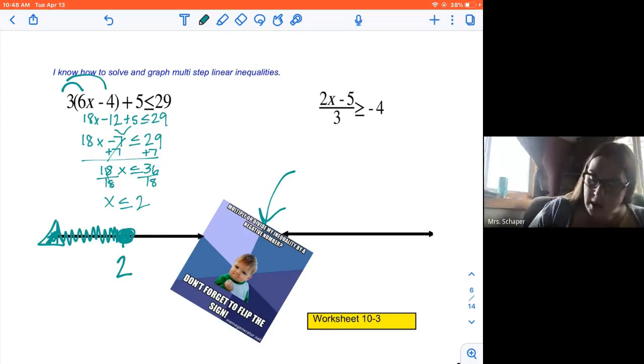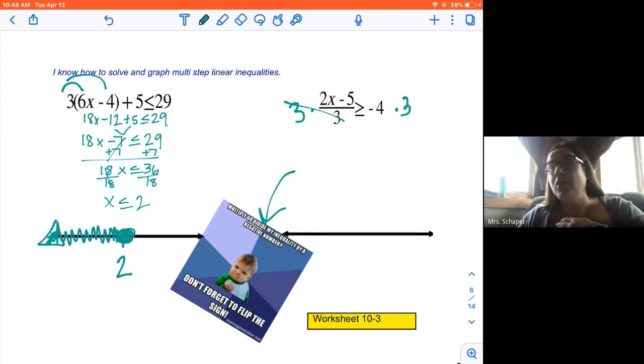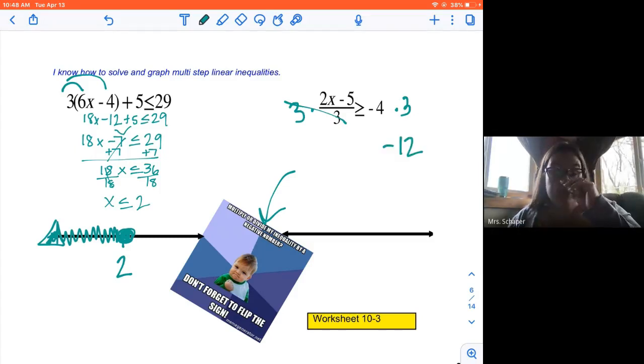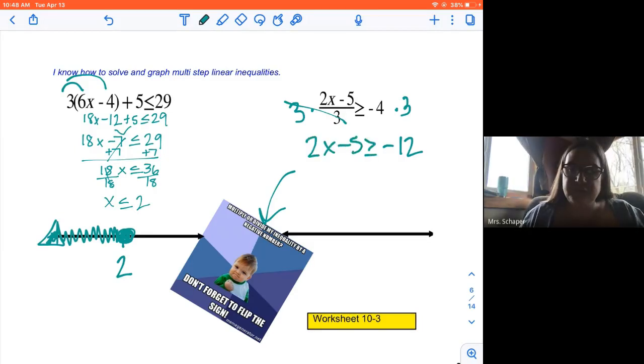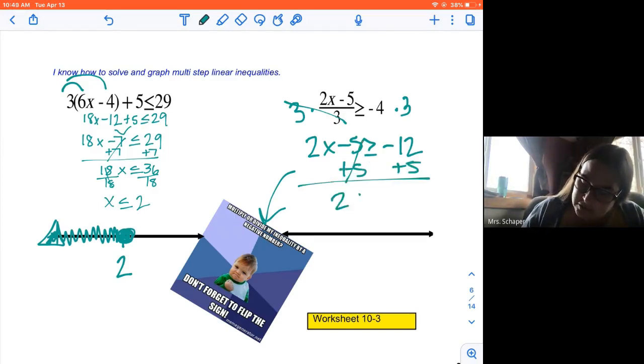I'm going to start by multiplying both sides by 3 and cancel the fraction. Now, just a note, I'm taking 3 times negative 4, which is negative 12. That does not constitute switching the sign because the number I'm multiplying both sides by is positive. All right. So we've got that 2x - 5 ≥ -12. I'm going to add 5 to both sides. So 2x ≥ -7.